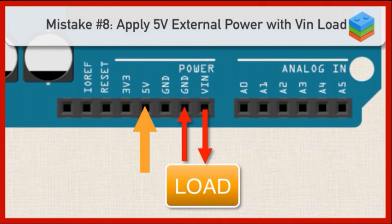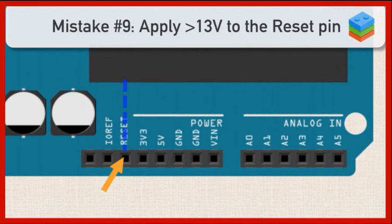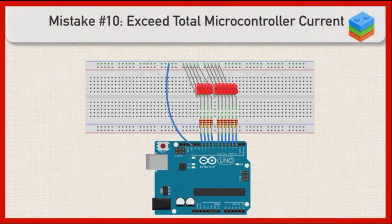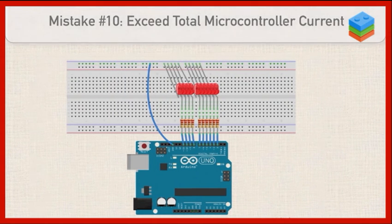If you've decided, against the recommendation of Arduino, to apply external power via the 5-volt pin, and then you put a load on VIN, you can destroy that 5-volt regulator. You don't want to apply greater than 13 volts to the reset pin. And you don't want to exceed the total microcontroller current, which is 200 milliamps. So all of the current that you're pulling from all of those I.O. pins added together shouldn't exceed 200 milliamps.